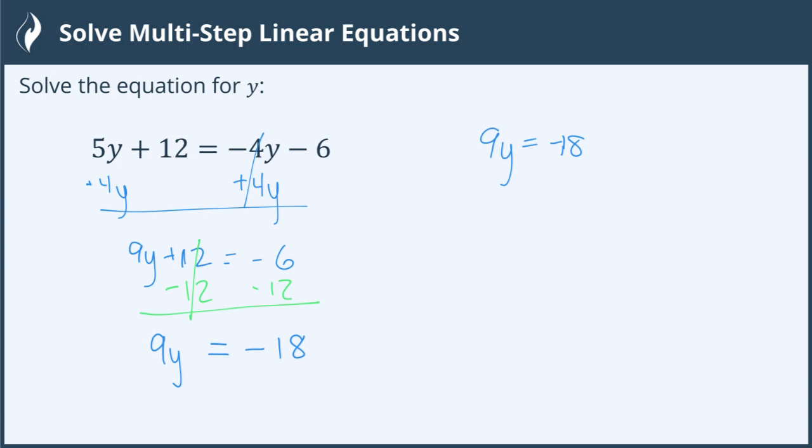So if I want to isolate y, which is the goal—we're trying to find what y is—if I have 9 times y, the inverse operation for multiplication is division. So because 9 is being multiplied by y, that's what this is saying mathematically, I'm going to divide both sides by 9.